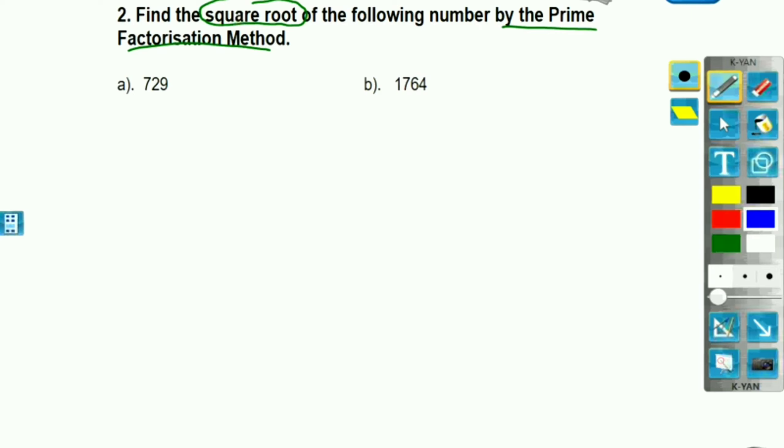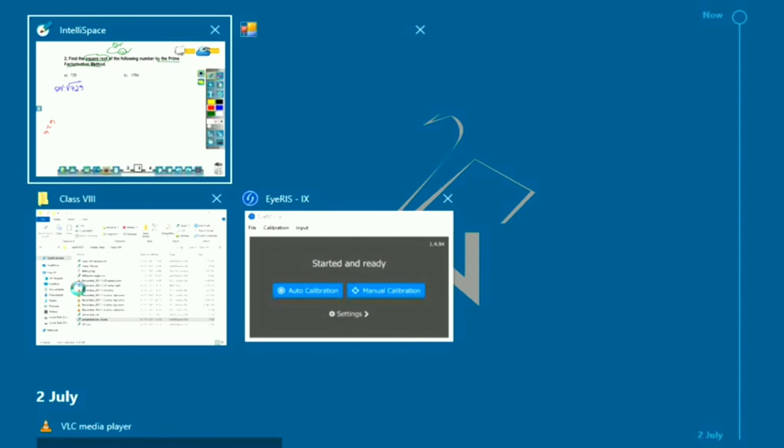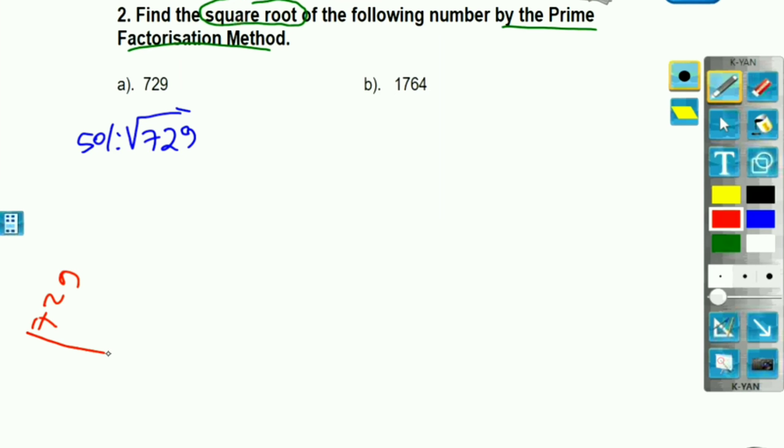Solution. We are going to find the square root of 729. This is root over. 729 we have to find. Now I am going to do rough first. 729.